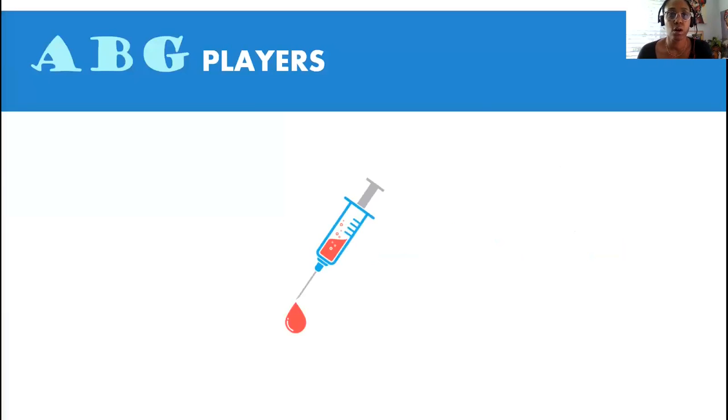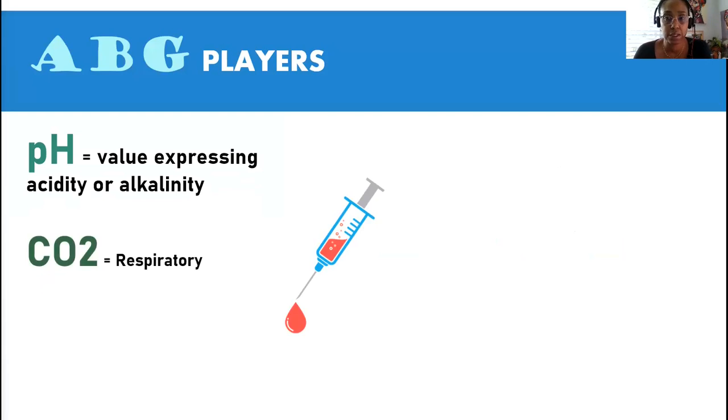Here are our ABG components. We call it ABG players. This is kind of a game. We have pH, which is the value of acidity or alkalinity in arterial blood. CO2 refers to your respiratory system because this is where you will breathe out CO2. And bicarb, HCO3, refers to your metabolic system. That compensation happens in the kidneys.